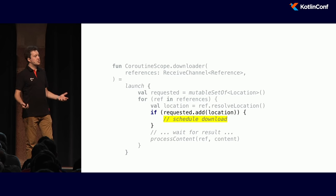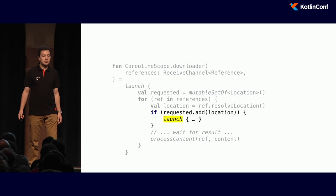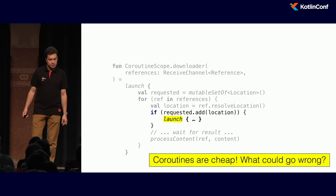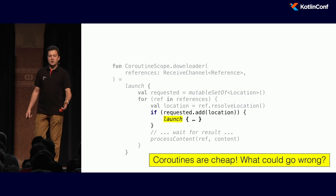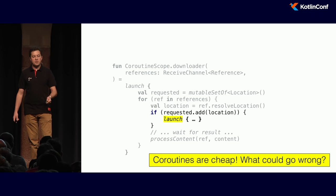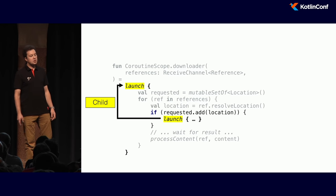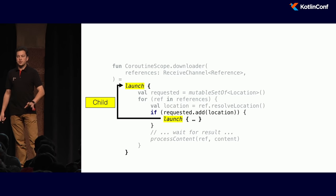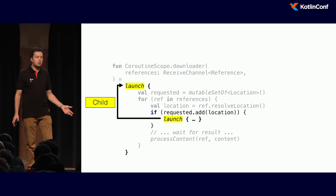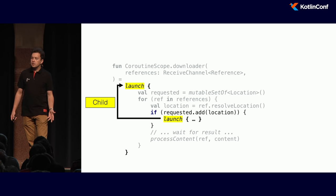So how do we schedule this parallel download? We have coroutines, so we can launch a coroutine to download. Coroutines are cheap — what could go wrong? You might think: you already told us what could go wrong — we launch a coroutine per item and lose them on exception. But not here. Here we have our bases covered, because `launch` also defines the scope for coroutines. Whenever we launch from inside it, that becomes a child and works nicely. If that thing crashes, it also cancels all the downloads it had launched. So it's not the problem of leaking coroutines — it's something else.